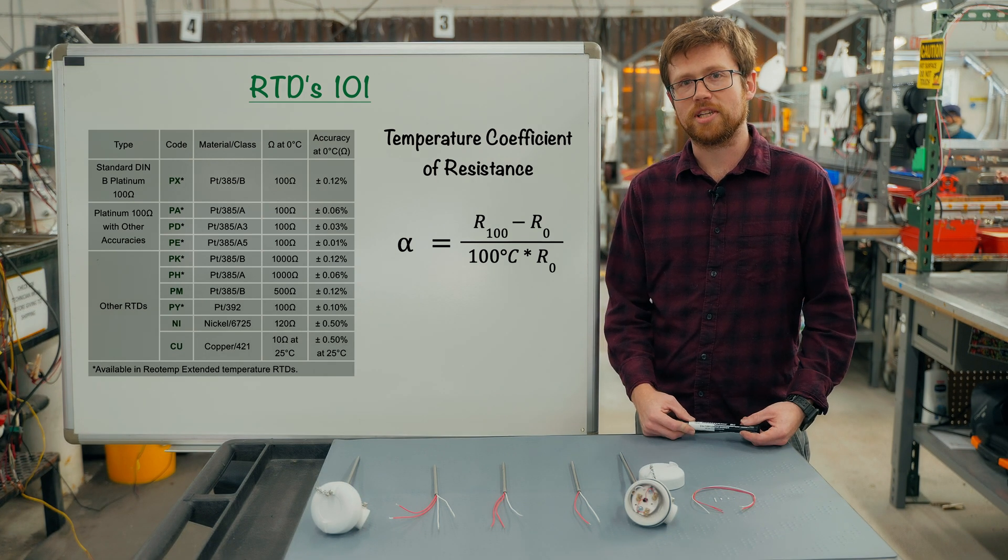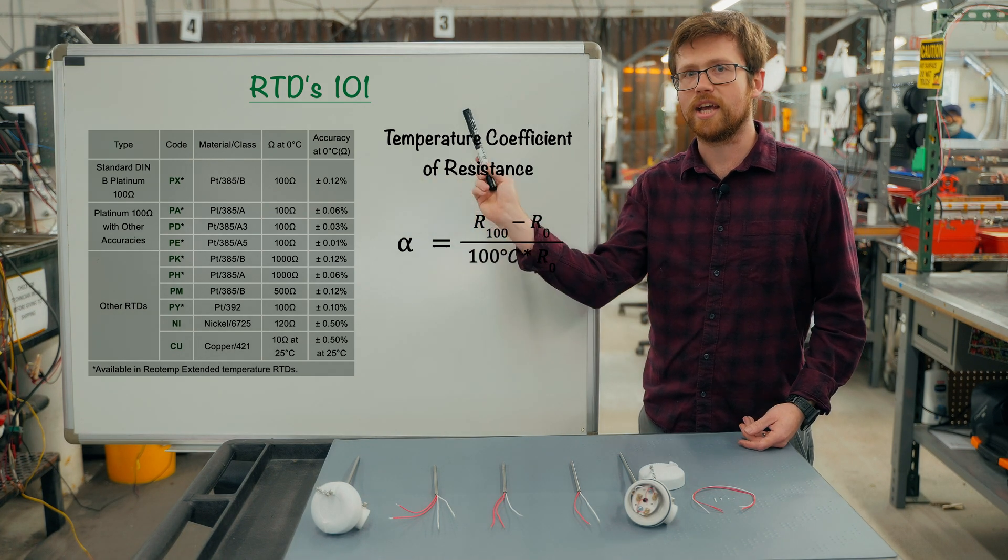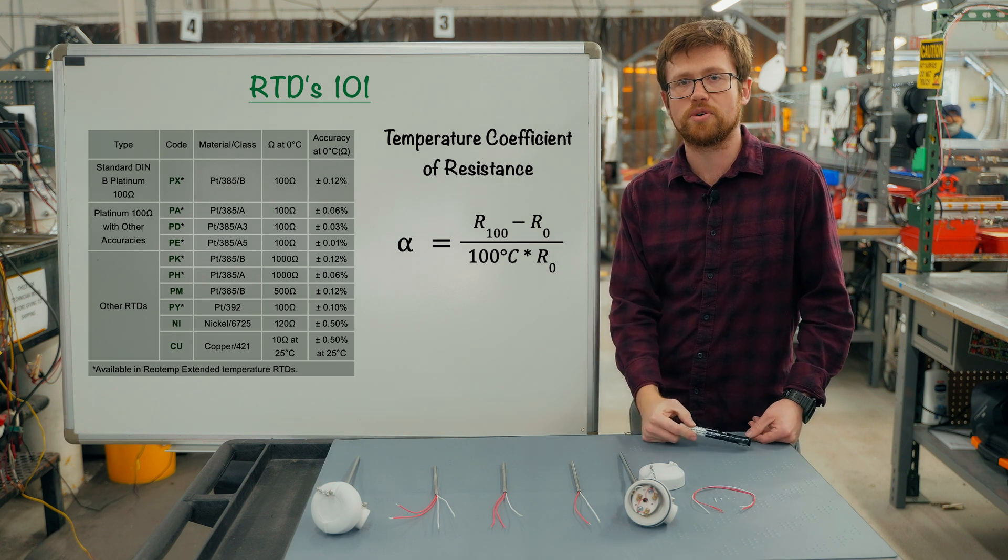RTDs are generally classified by two numbers: the resistance at zero degrees C and the temperature coefficient of resistance, or alpha coefficient.